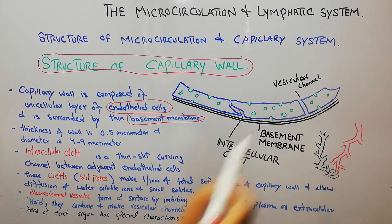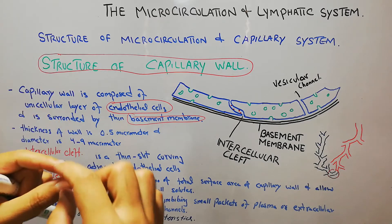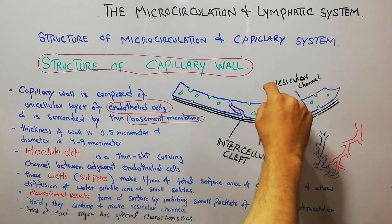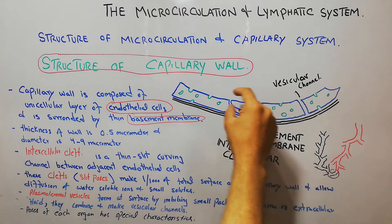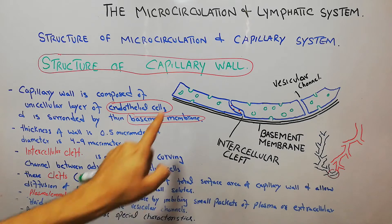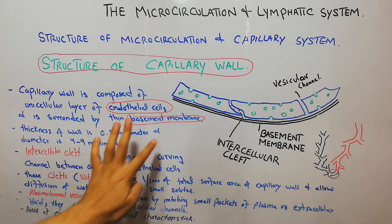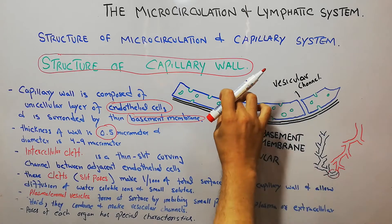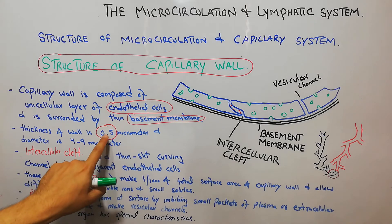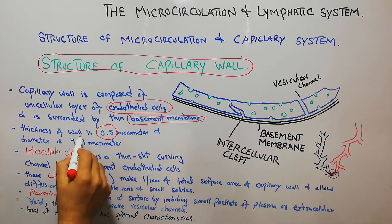The black color shown here represents the basement membrane. The capillary wall is made of a unicellular layer — a layer of just one cell — of endothelial cells placed side by side, lying on the basement membrane. The thickness of this wall is about 0.5 micrometers. The inside diameter of the capillary — shown here in red — is about 4 to 9 micrometers.